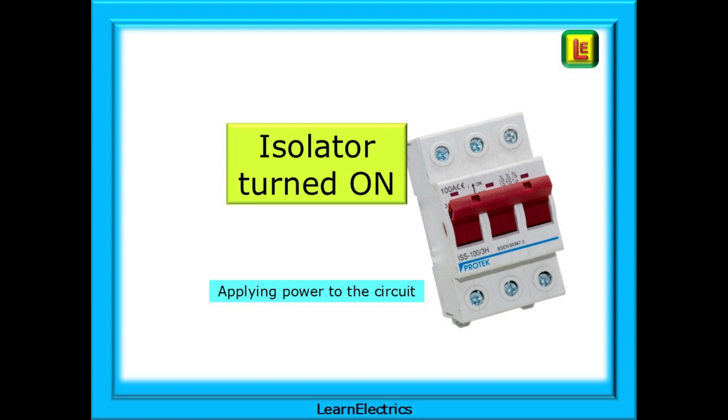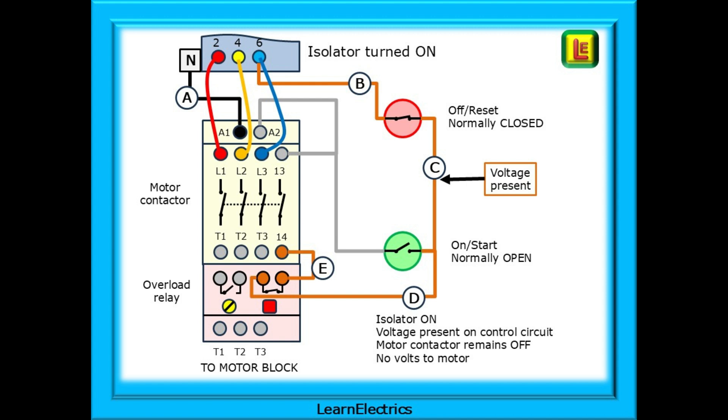Next, turn the isolator on. We will apply power to the circuit. With the isolator turned on, we have three-phase power at the base of the isolator. Following standard numbering convention, these will be marked as 2, 4, and 6. Three coloured cables will connect the isolator to the motor contactor, and we have used the old colour convention for 400 volts three-phase of red, yellow, and blue wires, as they are easier to distinguish on computers and tablets. The terminals are also coloured red, yellow, and blue, as 400 volts is now present at these points.